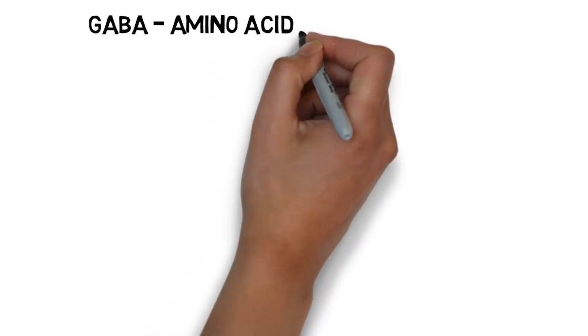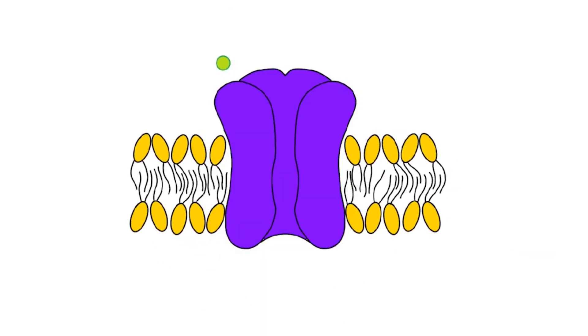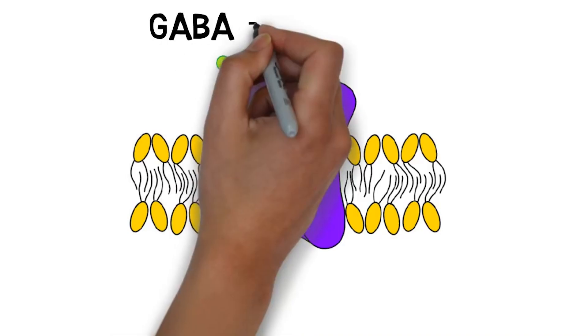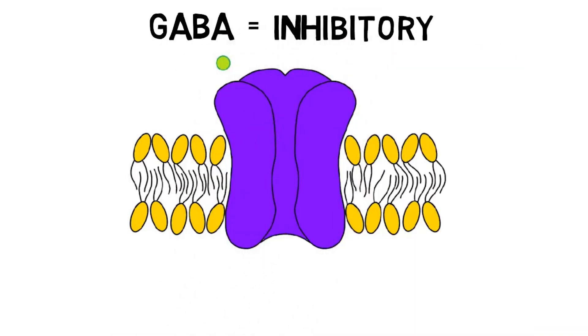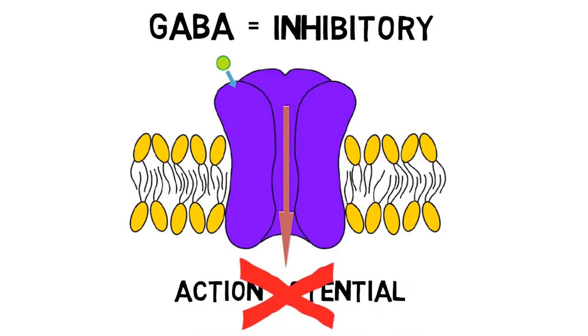Although GABA's primary functions are as a neurotransmitter, it has the structure of an amino acid and thus is referred to as an amino acid neurotransmitter. It is synthesized from another amino acid neurotransmitter, glutamate, in a reaction catalyzed by the enzyme glutamic acid decarboxylase. The function of GABA changes over the course of neural development, but in the mature brain it acts primarily as an inhibitory neurotransmitter. In other words, when GABA interacts with the receptors of a neuron, it generally makes the neuron less likely to fire an action potential or release neurotransmitters.